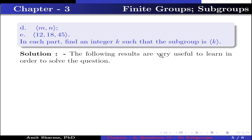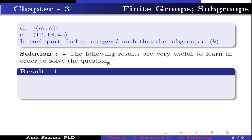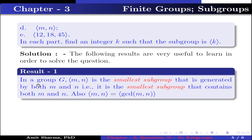The following results are very useful to learn in order to solve the question. Result 1: in a group G, the set generated by {m, n} is the smallest subgroup generated by both m and n — that is, the smallest subgroup that contains both m and n. Also, the set generated by {m, n} equals the set generated by gcd(m, n). Result 2: let G be a group and let a be any element of G, then the set generated by a is a subgroup of G.